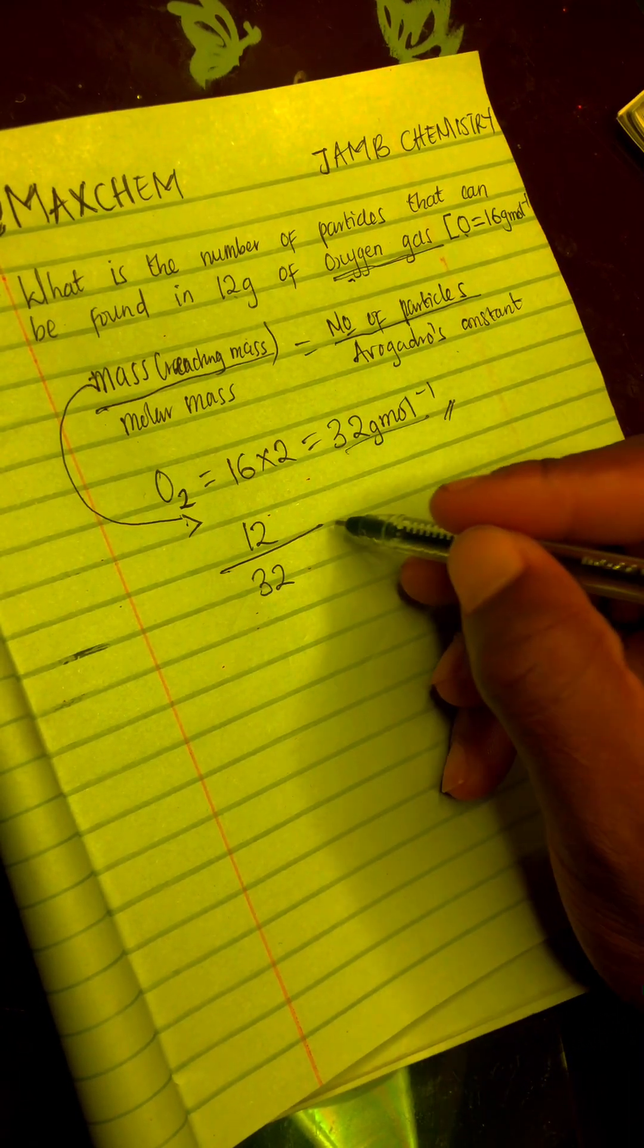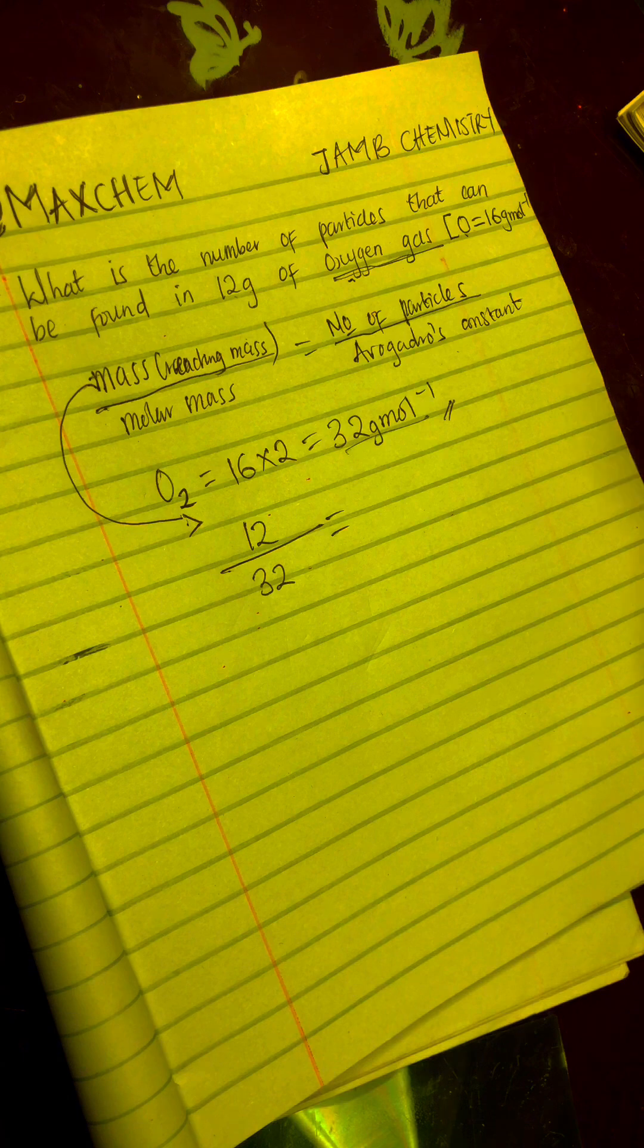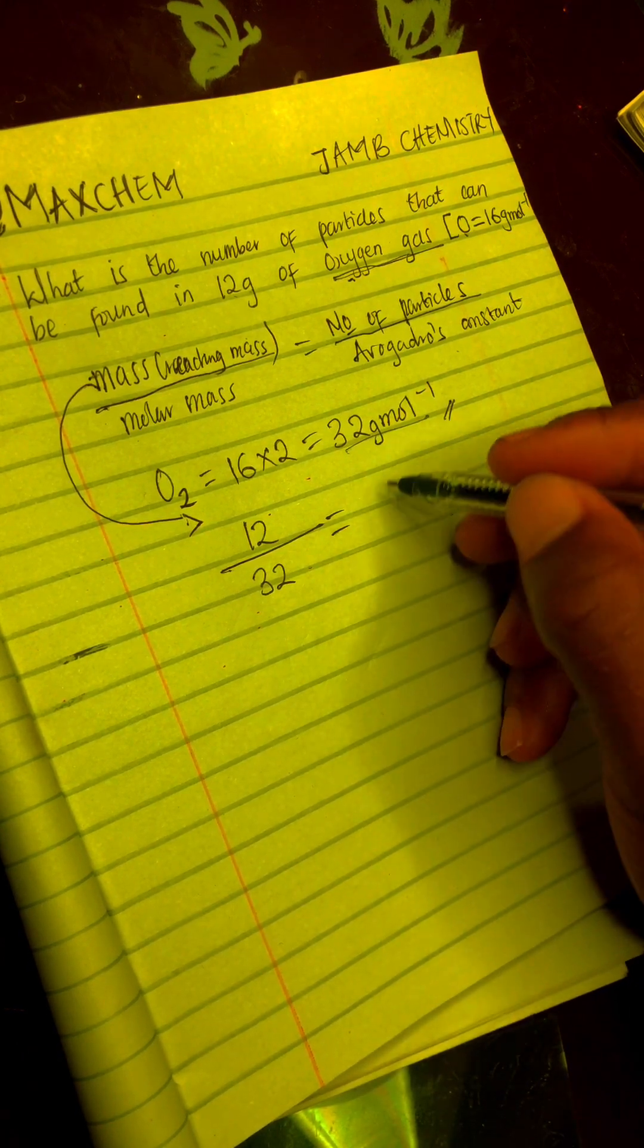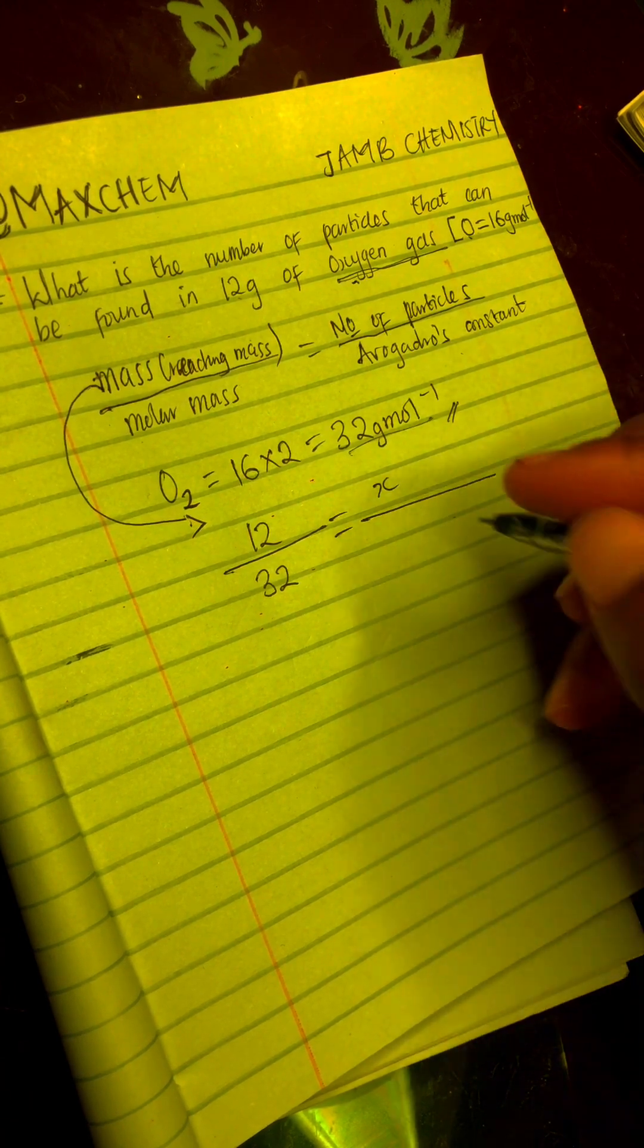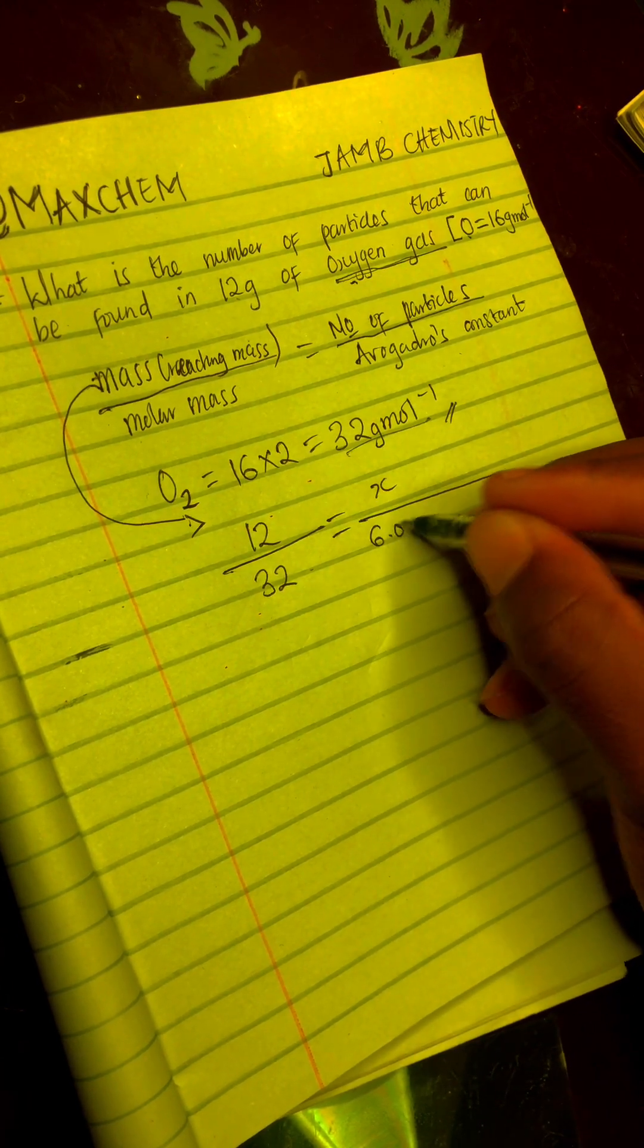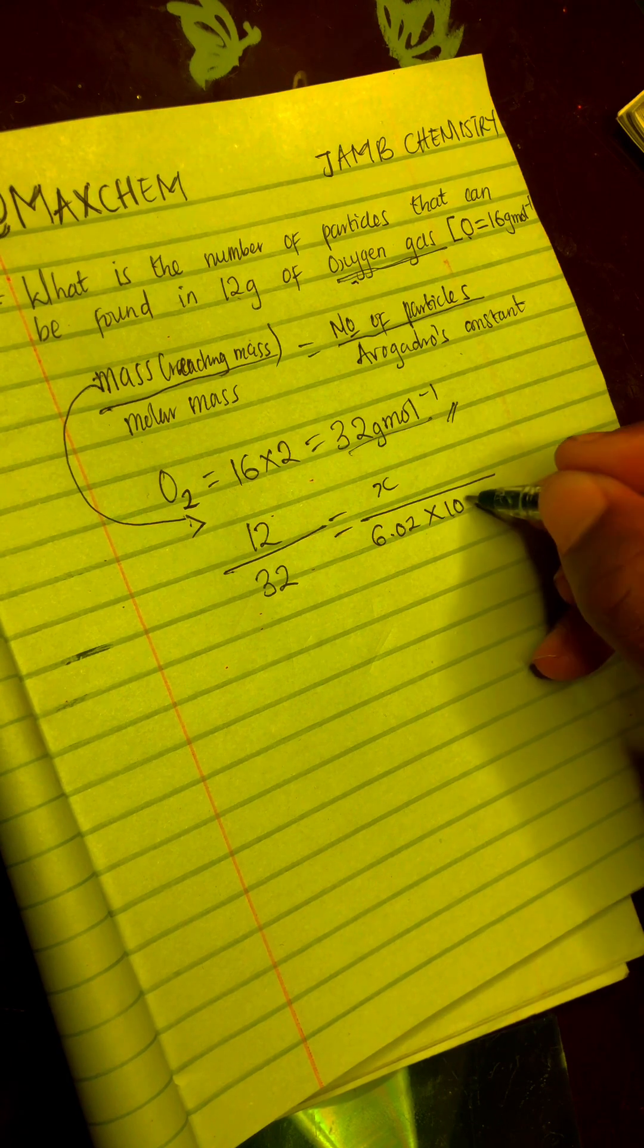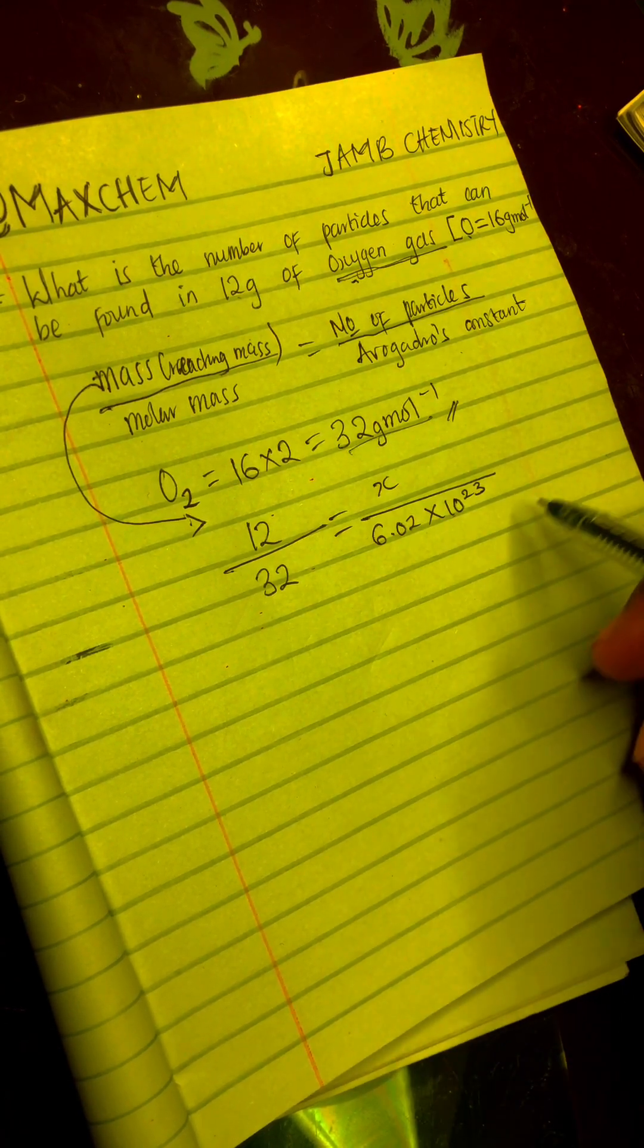32 grams per mole is equal to number of molecules or number of particles. That is what we are looking for. So that is represented with X. All over, what is Avogadro's constant? Avogadro's constant is 6.02 times 10 raised to the power of 23.